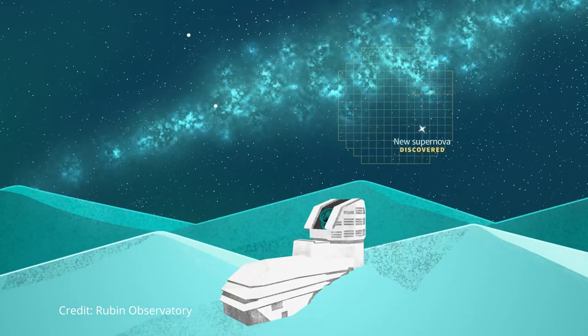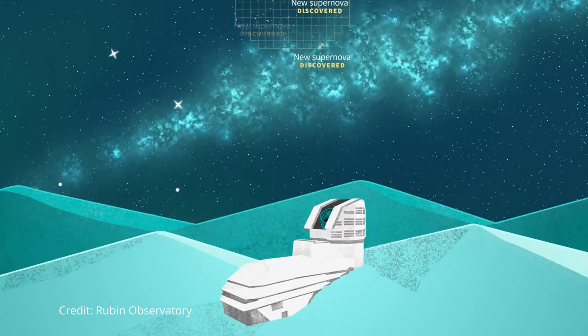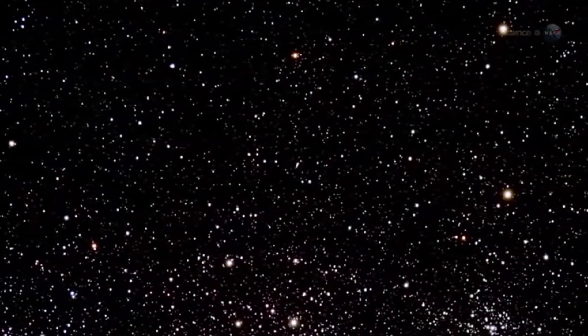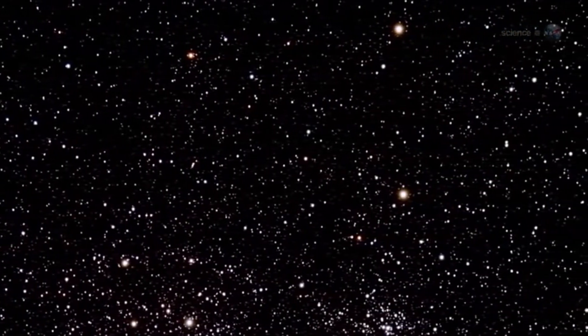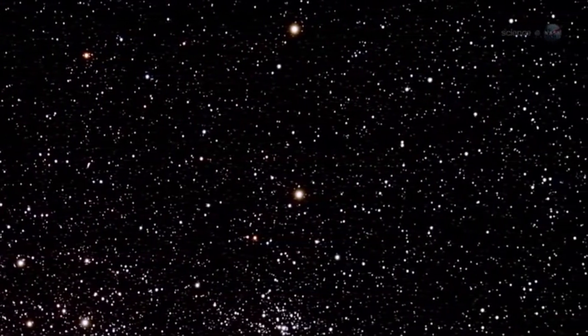By repeatedly scanning the sky, the LSST will track the motion of distant celestial bodies, allowing us to spot even the faintest of objects moving through space. Planet 9, if it's out there, might just be one of them.